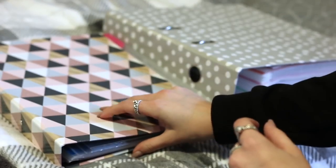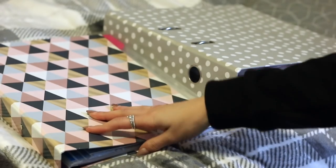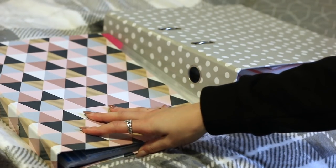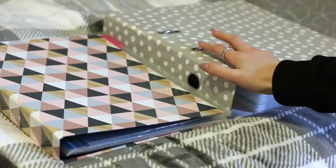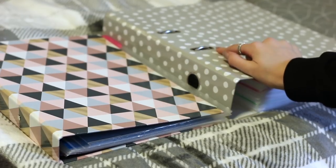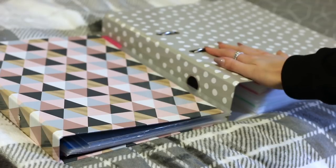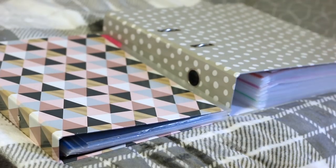And I can't actually remember where this folder was from. I feel like it was from home bargains or something but I literally can't remember. But I know that this lever arch was from the range and I also have the purple one which I'm going to use for next year. So yeah this is kind of my setup.